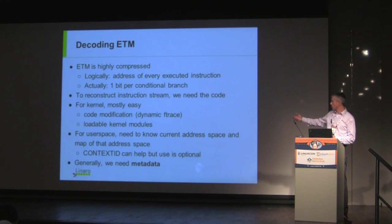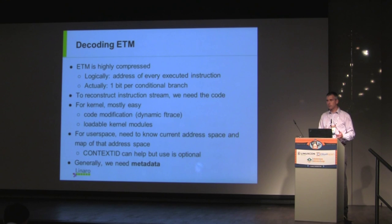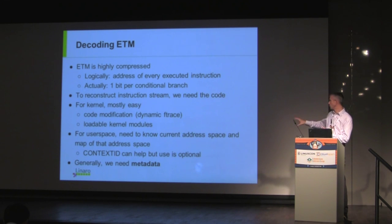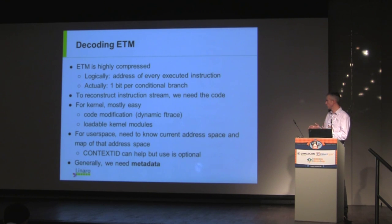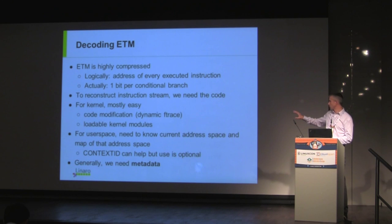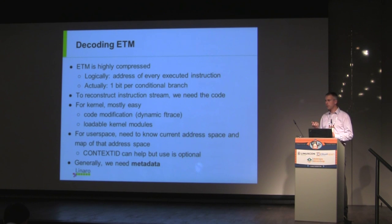There is this context ID register. This can be set up in the kernel using existing options to track the address space identifier. This means that you don't need to track separately when you're switching address spaces — when the scheduler switches from one address space to another, that's tracked in the context ID register and this comes out in the trace stream. If you're not using that register, you do need to have some separate record of when you switch between address spaces.